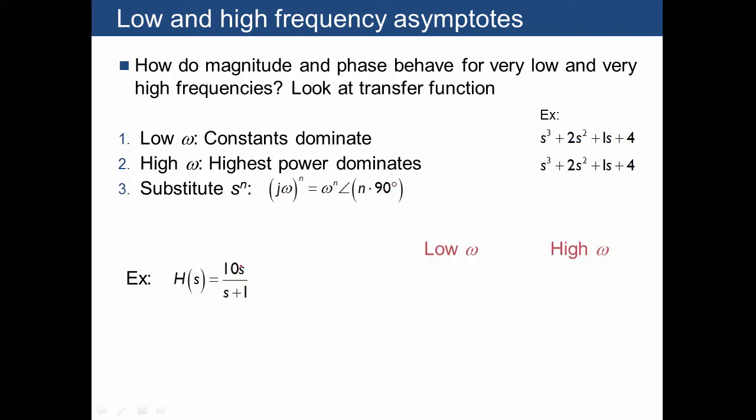Let's do an example. Here we have a transfer function 10S over S plus 1. First, the low frequency behaviors. For low frequencies, S is going to be small, and so this is going to be dominated by the 1. So this is essentially pretty close to 10S, where we plug in J omega, and what we get from that is a magnitude of 10 omega at an angle of 90 degrees.